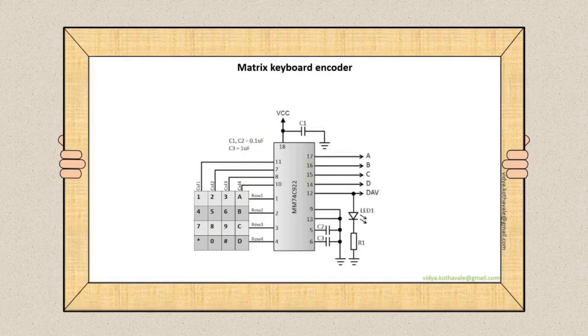Matrix keyboard encoder: As the name implies, matrix keyboard consists of input keys in the form of decimal numbers, alphabets, and special symbols arranged in a row-column fashion, and hence the name matrix keyboard. It's an encoder because it converts these decimal numbers and alphabets into their BCD equivalent code. The encoder IC here is 74C922.